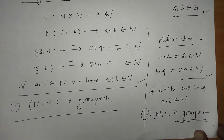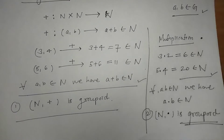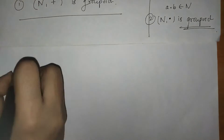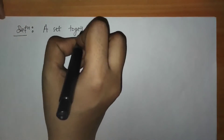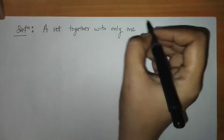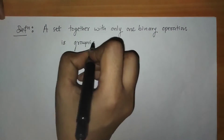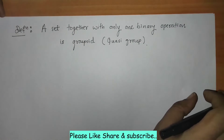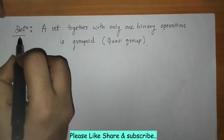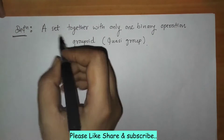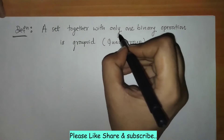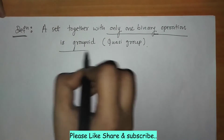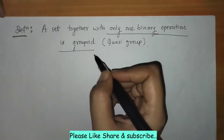Now we can write down the definition of groupoid. A set together with only one binary operation is called a groupoid.